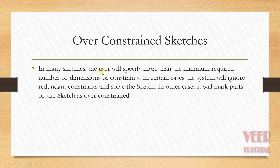In many sketches, the user will specify more than the minimum required number of dimensions or constraints. In certain cases, the system will ignore the redundant constraint and solve the sketch. In other cases, it will mark parts of the sketch as over-constraint. So when we insert more than the required dimensions, sometimes the software will try to automatically solve the sketch, but sometimes it cannot solve it and defines this type of sketch as an over-constraint sketch.